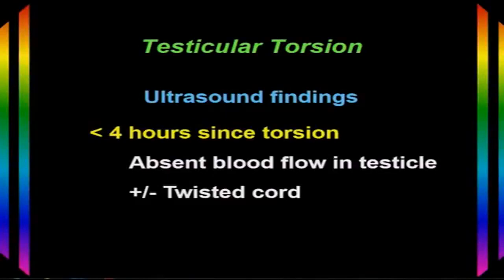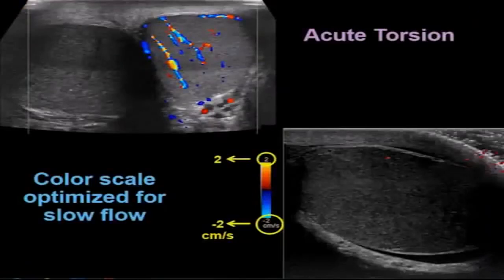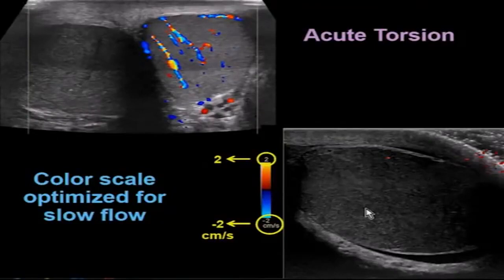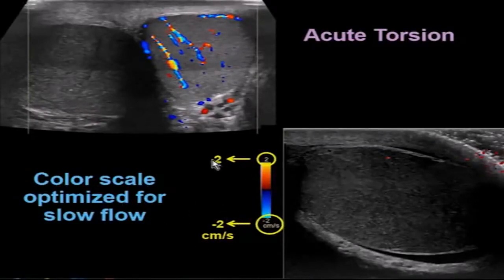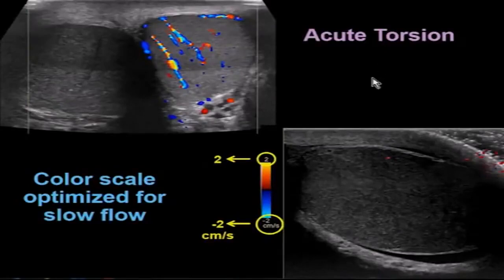With testicular torsion, we'll see absent blood flow in the testicle and may or may not see the twisted cord. Here's a patient with acute testicular torsion — the right testicle is slightly hypoechoic compared to the left, and with color Doppler there's no flow inside it. It's important to optimize the color scale for very slow flow, set here at 2 to minus 2 centimeters per second. Still, we identify no flow in the right testicle, whereas we see good flow in the left.